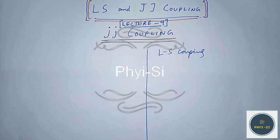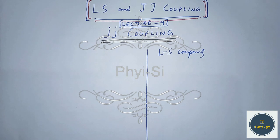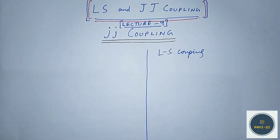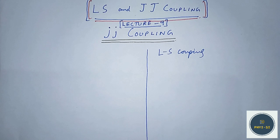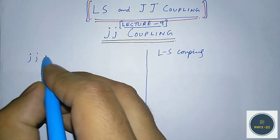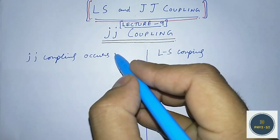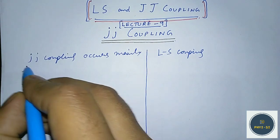Hello friends and welcome again to my channel FaiSai. From the past 8 lectures we were studying about LS coupling in this series of LS and JJ coupling. In today's lecture, lecture number 9, we will shift to the JJ coupling. The LS coupling occurs mostly in lighter atoms, but the JJ coupling occurs mainly in the heavier atoms.